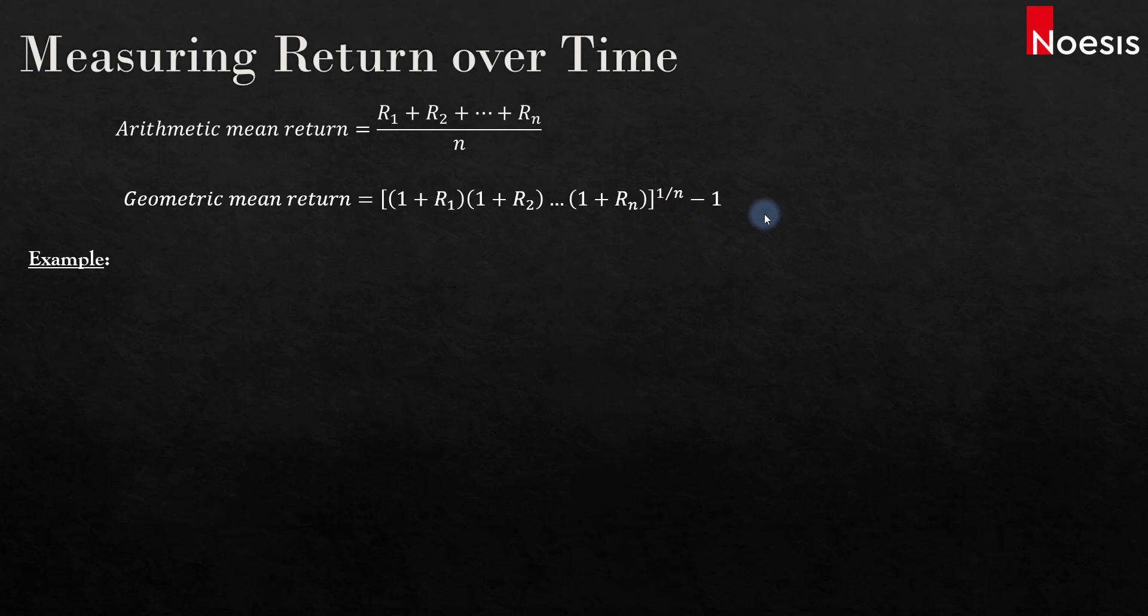Let's take an example where we have a hypothetical investment held for 2 years. The initial cost is $80, after 1 year the price drops to $50, and 1 year later the price goes back up to $80.